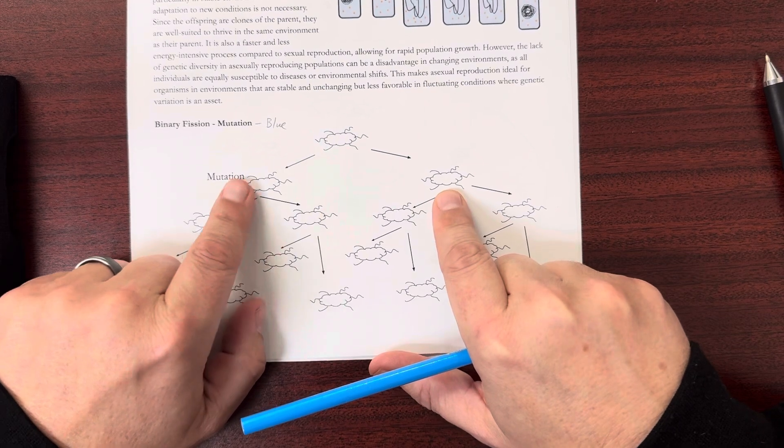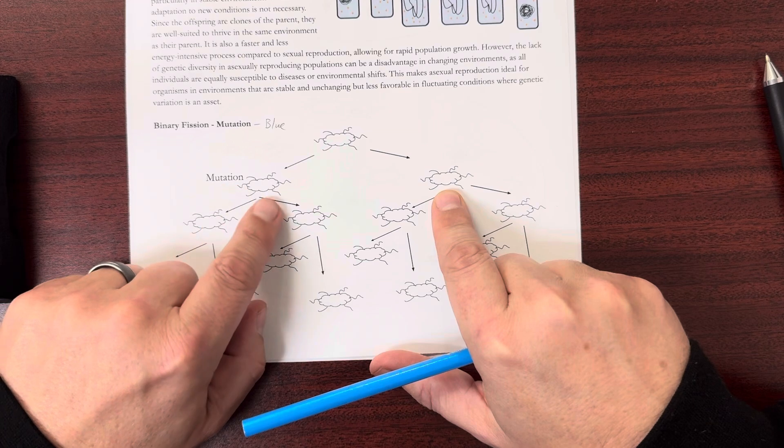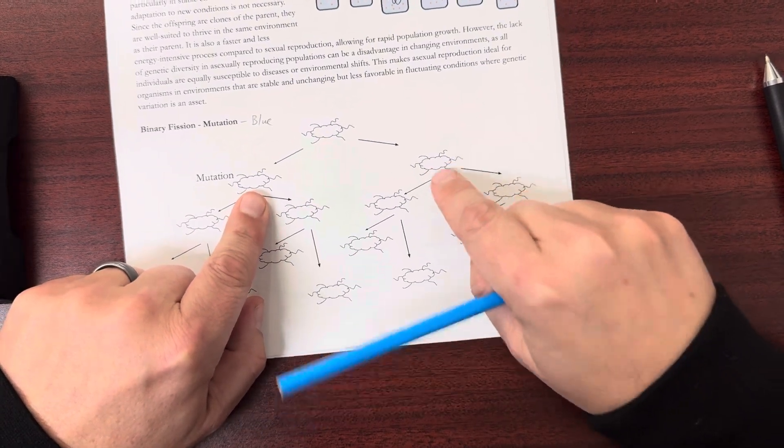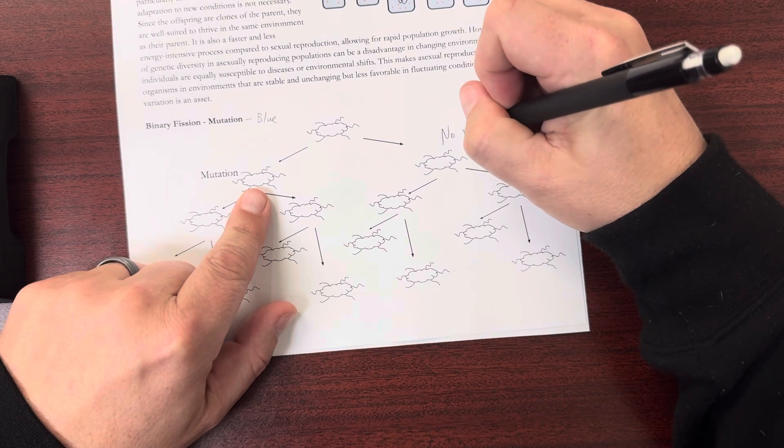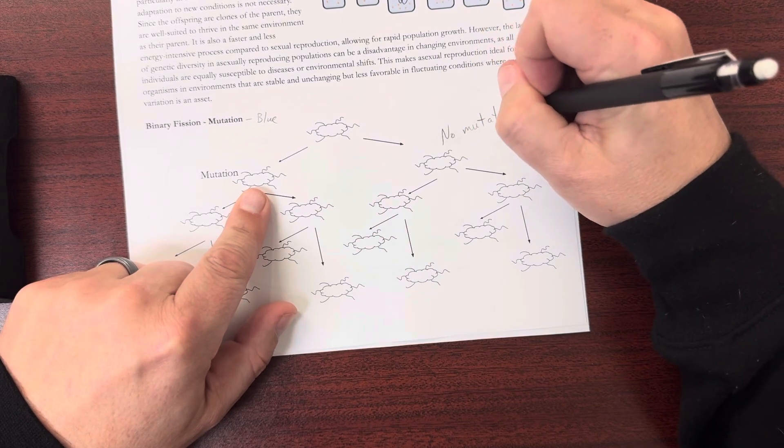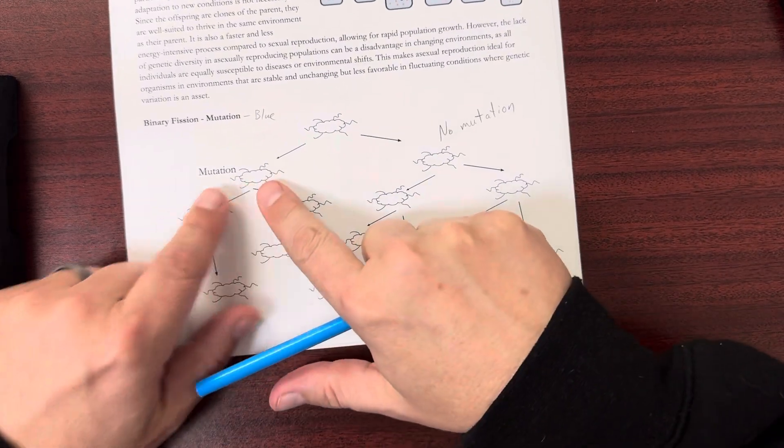But in one of these, we get a mutation. So something has mutated inside the DNA. There is no mutation here. It does not get that same mutation because that mutation can happen randomly. So it takes place in this one.